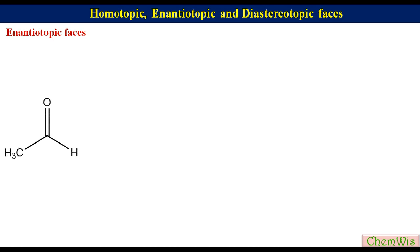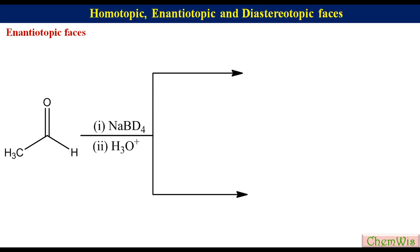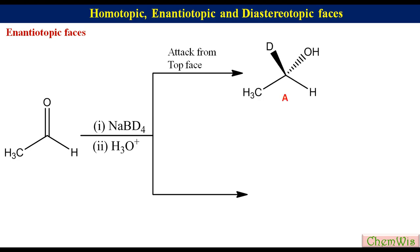Now we come to the second point: enantiotopic faces. Let's take the example of acetaldehyde. If we allow it to react with NaBD4, top face attack will put deuterium above the plane, forcing oxygen to go away from the plane, leading to the formation of structure A. Bottom face attack will put deuterium below the plane, forcing oxygen to come out of the plane, leading to the formation of structure B.